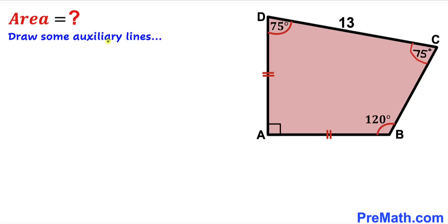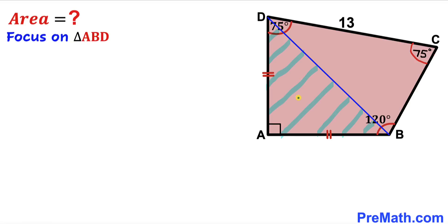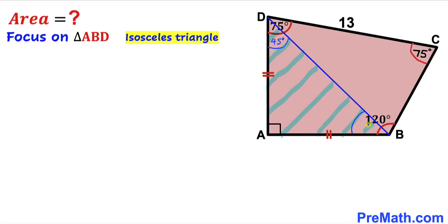We are going to draw some auxiliary lines to make our job a little bit simpler. I have connected vertices B and D, and as a result we got this right triangle DAB. Focusing on this right triangle ABD, we can see it is an isosceles triangle since side length AD equals side length AB. So therefore these base angles are congruent — each is 45 degrees.